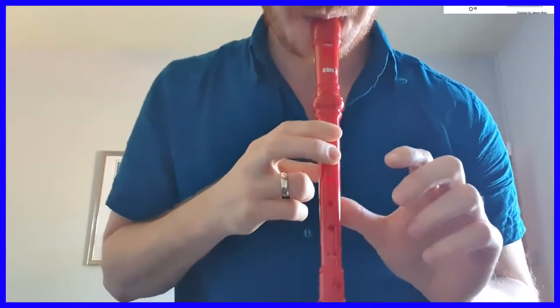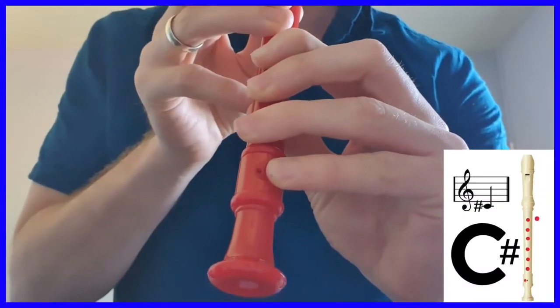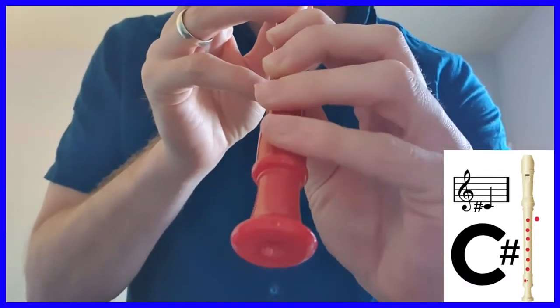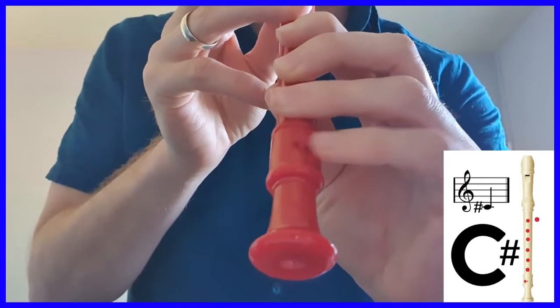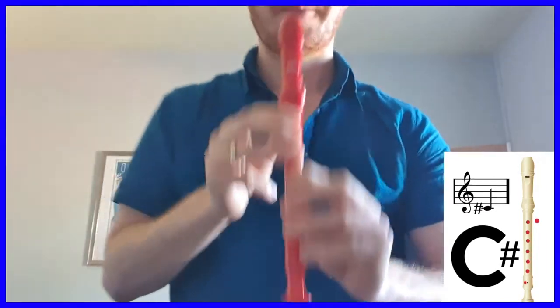High C sharp is a totally different fingering. What we do is take a normal A and take away the thumb. Let's recap. The two new notes are low C sharp with half of that last hole covered—it's called the C hole because fully covered is a C, so half of it covered is a C sharp—and high C sharp is the same as an A without the thumb.